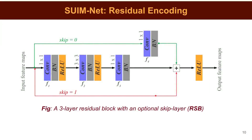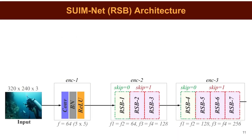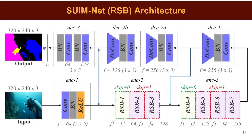The base model of SWIMnet incorporates a three-layer residual block as the core element of its encoder, called RSB, because its residual connection allows an optional skip layer. Each convolutional layer is followed by batch normalization and ReLU nonlinearity, and the optional skip layer is controlled via a flag during compilation. SWIMnet uses a total of seven RSBs sequentially in the second and third encoder blocks, eventually extracting 256 feature maps from RGB input images. These feature maps are then exploited by three sequential decoder blocks.